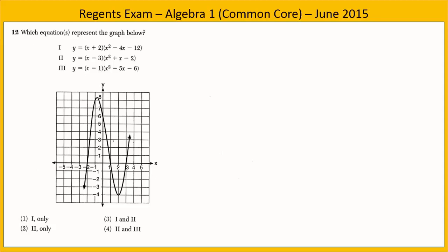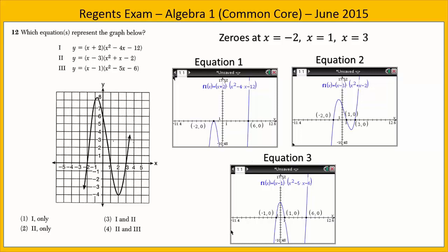In Exercise 12, we are given a graph and three equations. We want to know which equation — there could be more than one — could be used to represent this graph. The zeros of the graph are at x equals negative 2, x equals 1, and x equals 3. Using the graphing calculator, we put each equation into the graph and look at the zeros. Equation 1 has zeros at negative 2 and 6 — those aren't correct, so equation 1 is out.